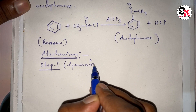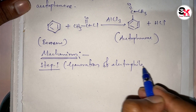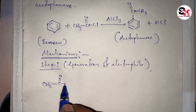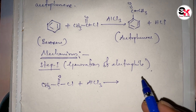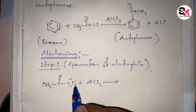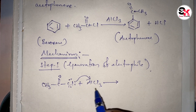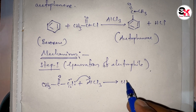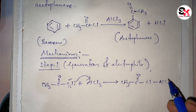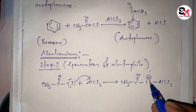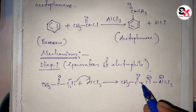Step one is the generation of electrophile. Here the acid chloride reacts with AlCl3 catalyst to form the electrophile. One of the lone pairs of the chlorine atom attacks AlCl3, which is electron deficient, to form CH3-CO-Cl·AlCl3. The chlorine becomes positively charged and AlCl3 becomes negatively charged. Then the carbon-chlorine bond becomes polarized and this bond will break.